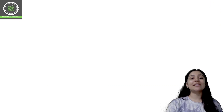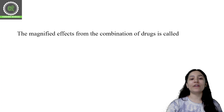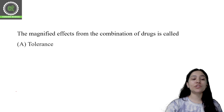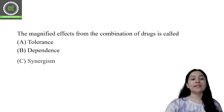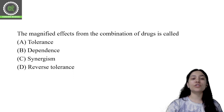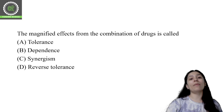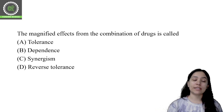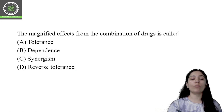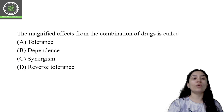The first question of today's class: the magnified effects from the combination of drugs is called — options are tolerance, dependence, synergism, and reverse tolerance. You can pause the video if you want more time to select your answer. The correct option for this question is option C: synergism.